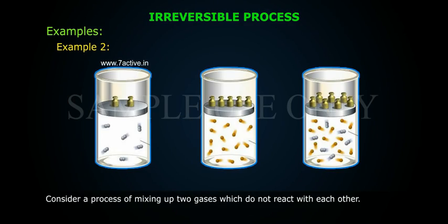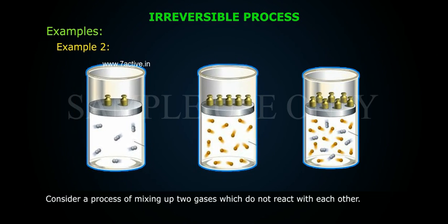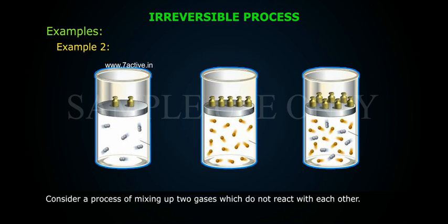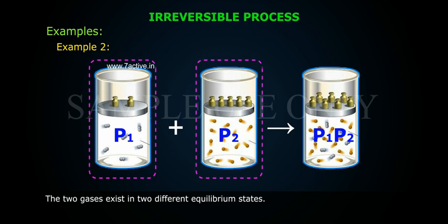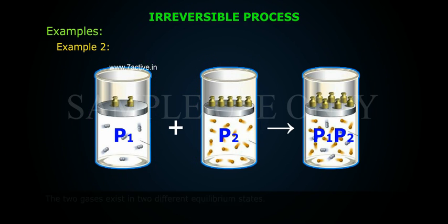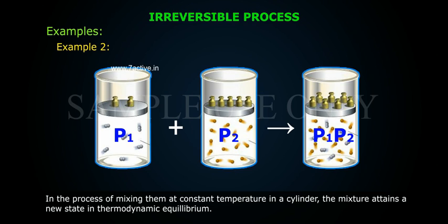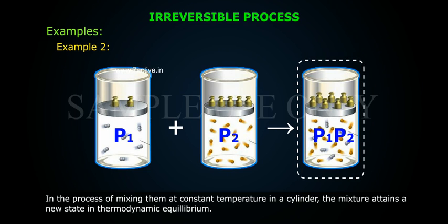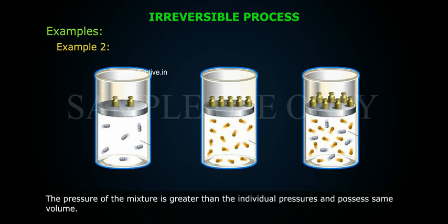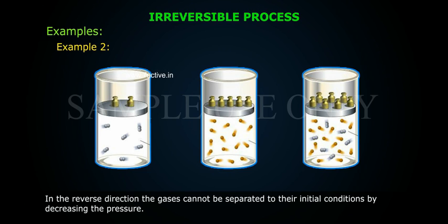Example 2: Consider a process of mixing two gases which do not react with each other. The two gases exist in two different equilibrium states. In the process of mixing them at constant temperature in a cylinder, the mixture attains a new state of thermodynamic equilibrium. The pressure of the mixture is greater than the individual pressures and they possess the same volume. In the reverse direction, the gases cannot be separated back to their initial conditions by decreasing the pressure.